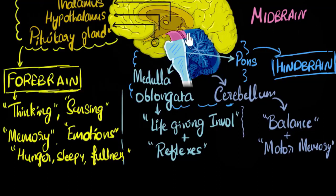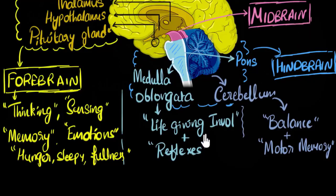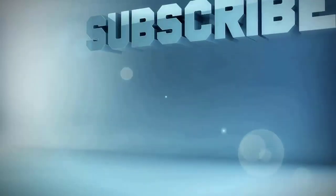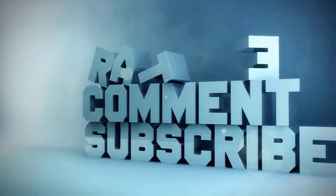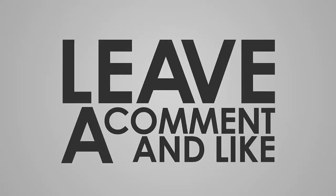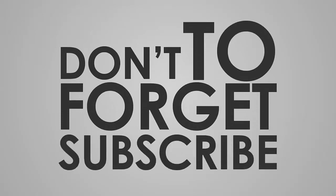Finally, the midbrain also controls some involuntary functions — for example, when light shines in your eyes, your pupils become smaller, and that's controlled by the midbrain. That's pretty much it. The screen now contains the entire summary, so try pausing the video and see if you can recall all the parts.